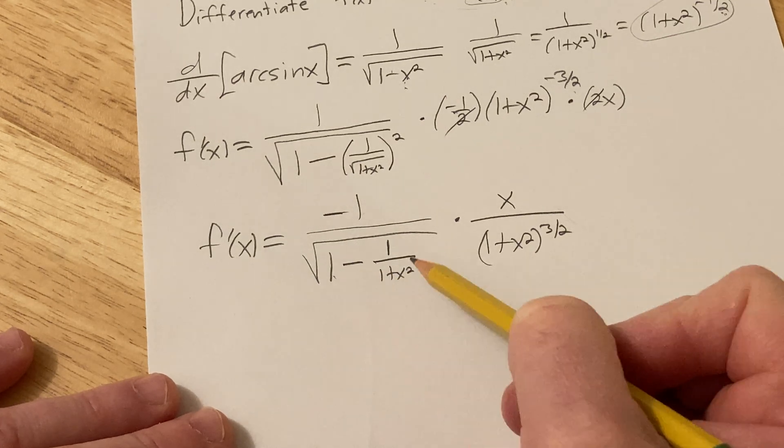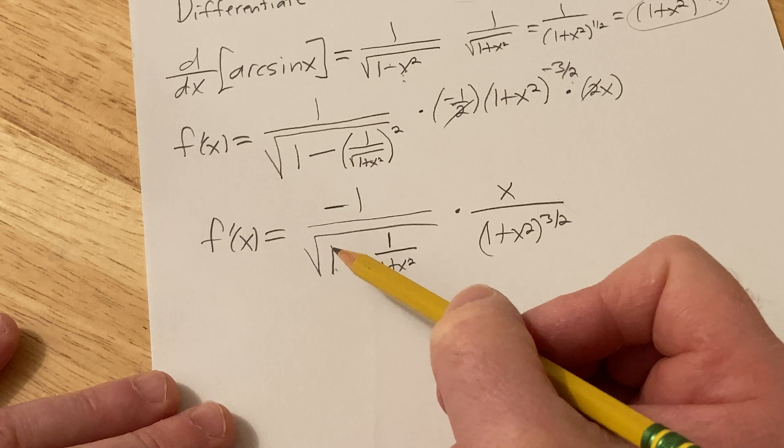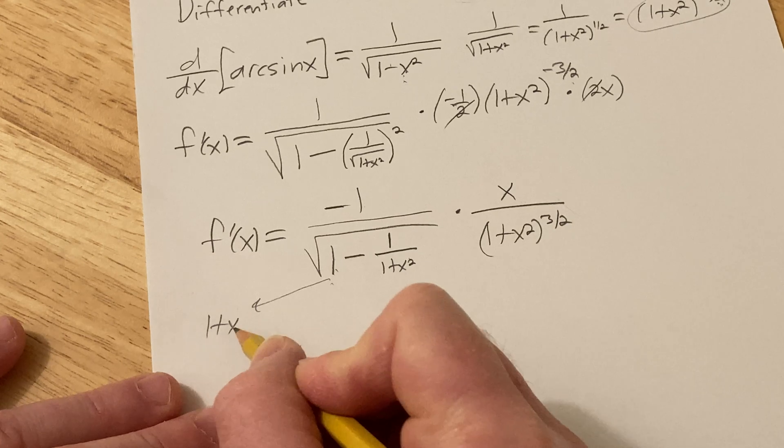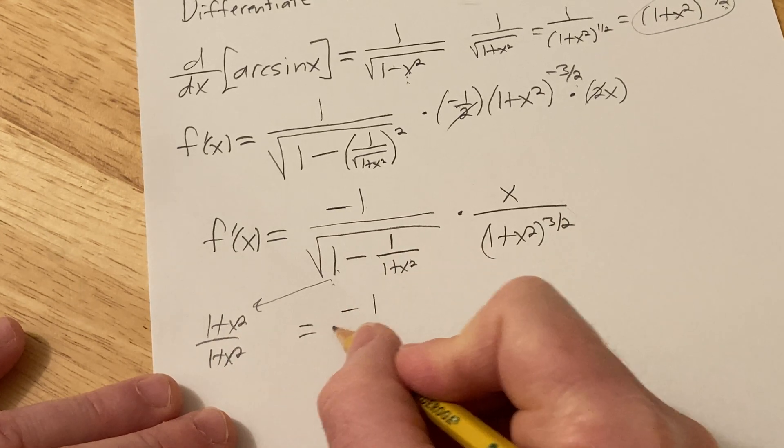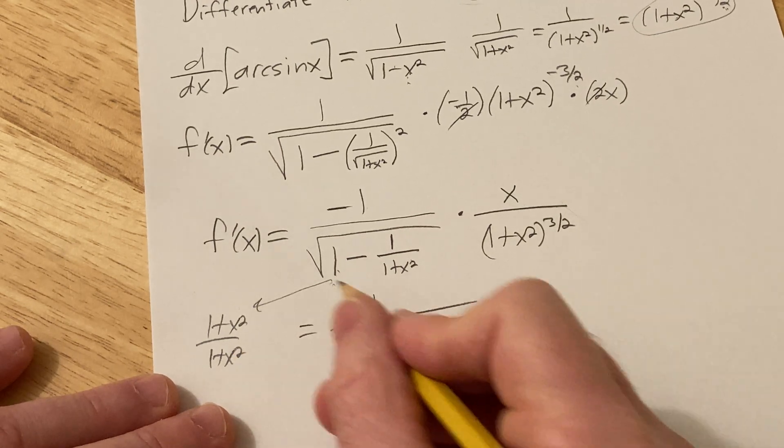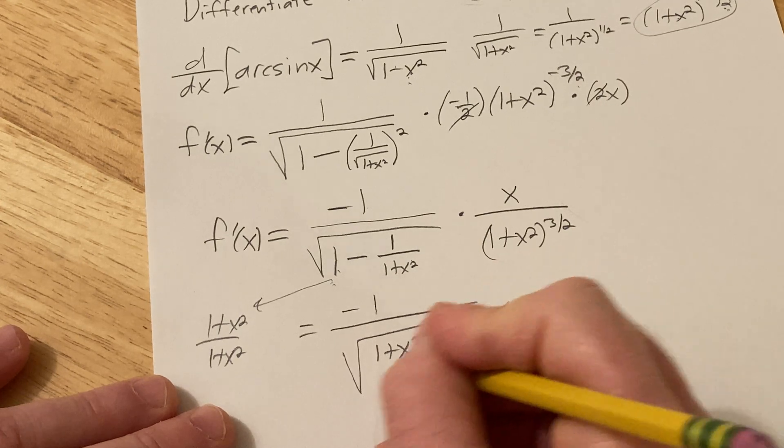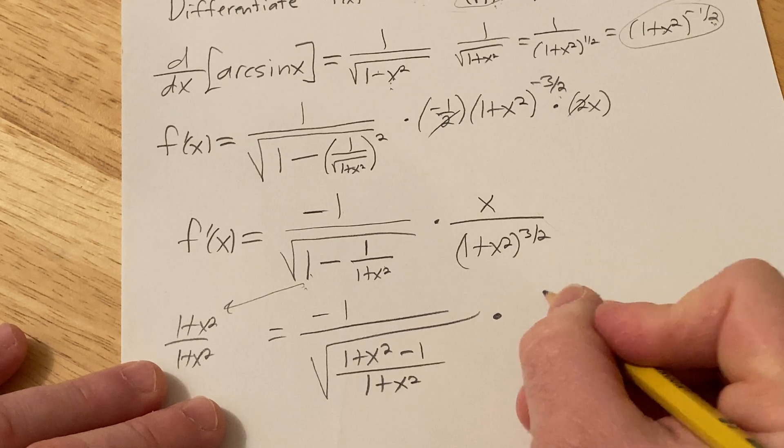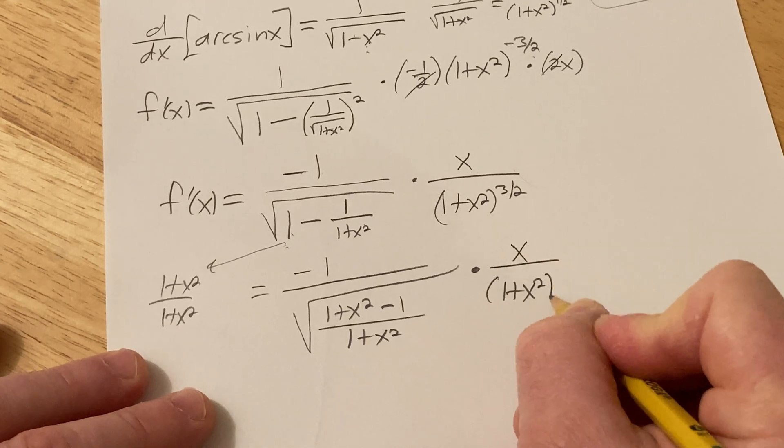All right, so this minus this, we can do the math here. Basically, you can think of 1 as 1 plus x squared over 1 plus x squared. And then watch this, since it's really a number over 1 plus x squared, you can write the whole thing under the same fraction, like this, this is a shortcut, times x over 1 plus x squared to the 3 halves.